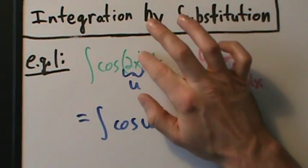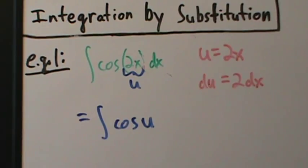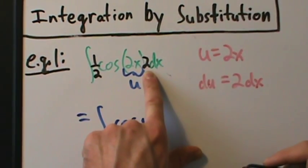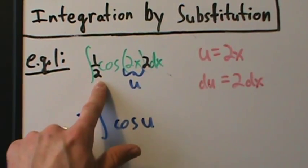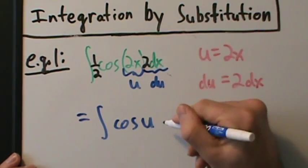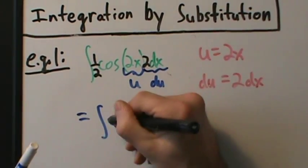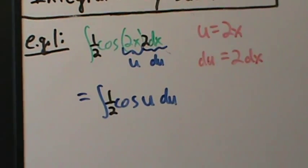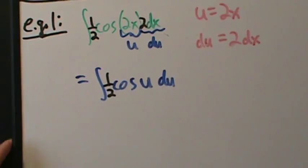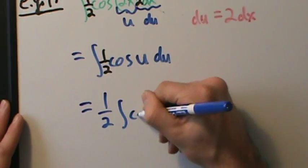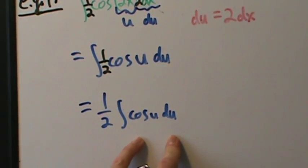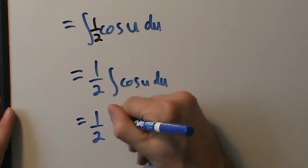Now 1/2 is just a constant so we can pull it out: 1/2 integral of cosine of u du. We know how to integrate that — it's a direct formula. So this is 1/2 times sine of u plus c. We integrated, the du is gone, we add plus c because it's indefinite, and then we have to go back to x since the original problem was in terms of x. So u is 2x, giving us 1/2 sine of 2x plus c. That's our answer.